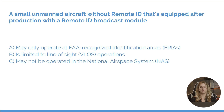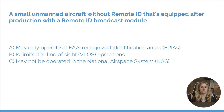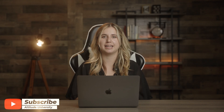A small unmanned aircraft without remote ID that's equipped after production with a remote ID broadcast module: A, may only operate at FAA recognized identification areas. B, is limited to line of sight operations. Or C, may not be operated in the national airspace system. Our answer here is B — we can still operate our drone, it just needs to be within the limitations of our visual line of sight. That's all we have for you today regarding remote ID and ADS-B. If you have any questions, please reach out to us and have a great rest of your day.